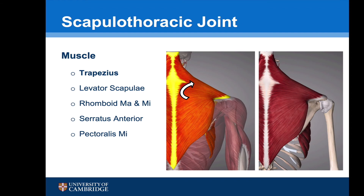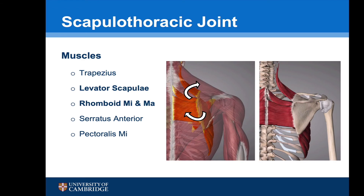The muscles that move the scapula and the scapulothoracic joint insert around the scapula circumferentially and work in a coordinated fashion. The trapezius is involved in upwards rotation, and deep to trapezius, levator scapulae and the rhomboid minor and major muscles are involved in both upwards rotation and also retraction of the scapula.